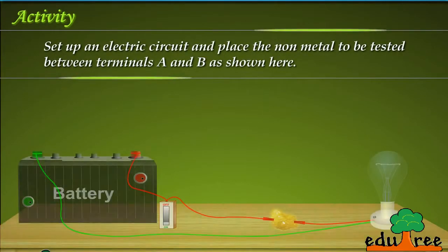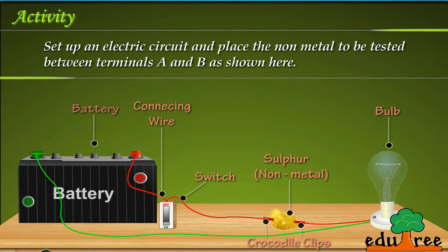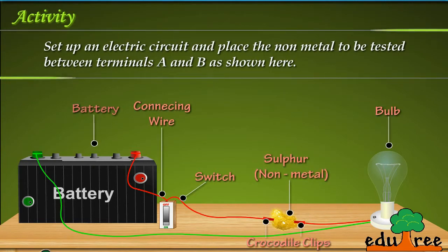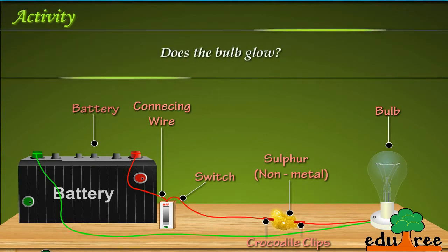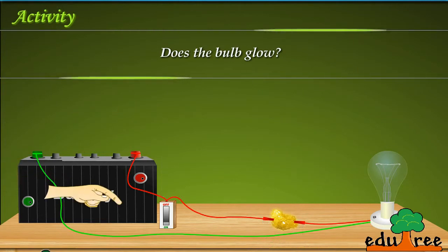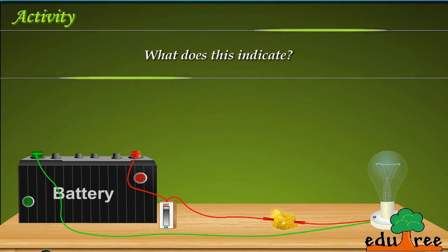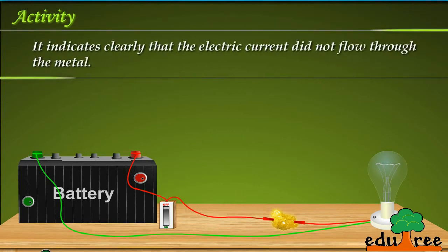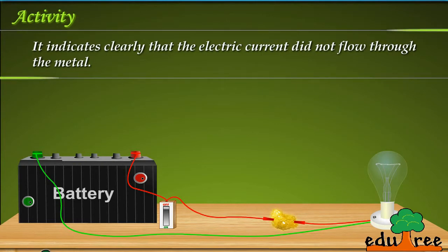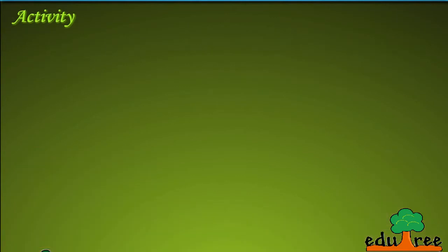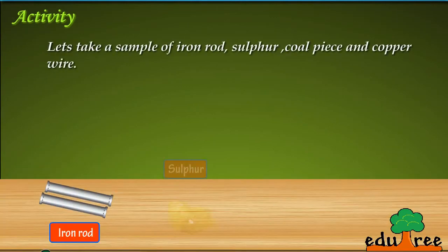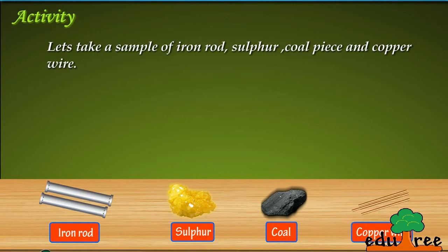Set up an electric circuit and place the non-metal to be tested between terminals A and B as shown here. Let's take a sample of iron rod, silver, coal piece, and copper wire.